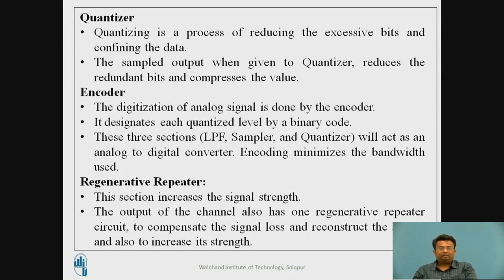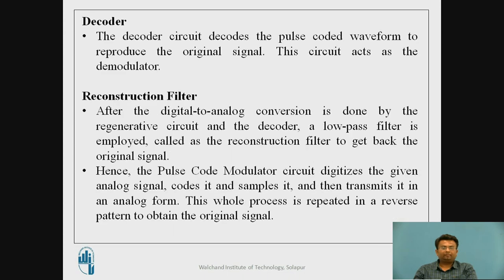The regenerative repeater increases signal strength. The output of the channel also has a regenerative repeater circuit to compensate for signal loss, reconstruct the signal, and increase its strength. The decoder circuit decodes the pulse-coded waveform to reproduce the original signal and acts as a demodulator.